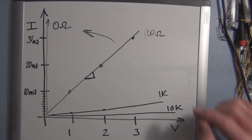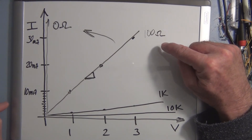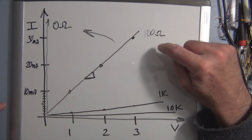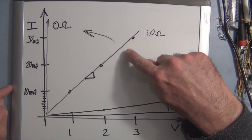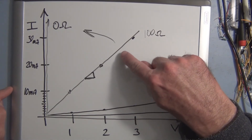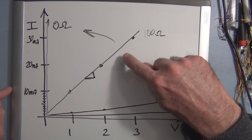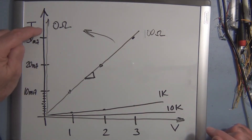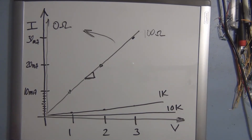Resistance is a constant and it's linear — it maintains the same proportion of voltage across the device to the current through it. When you graph it out, it's reflected in the slope of the line, showing the relationship between voltage and current. As you approach zero resistance, you have a vertical line, and as you approach infinite resistance, you have a horizontal line.